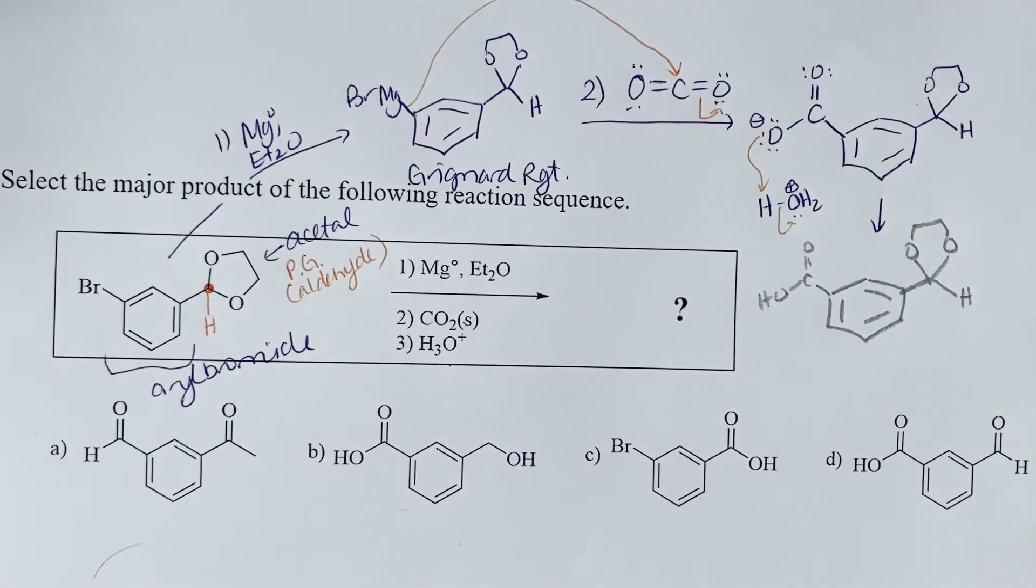And so when we hydrolyze an acetal, that acetal carbon will become a carbonyl. And these two oxygens would go back to being alcohols. Remember, we form an acetal from alcohols, your carbonyl compound, and a dry acid catalyst.